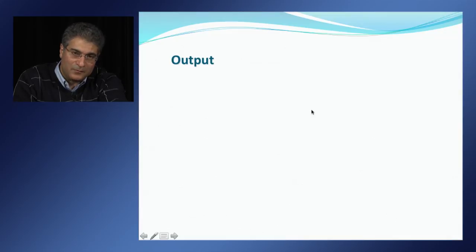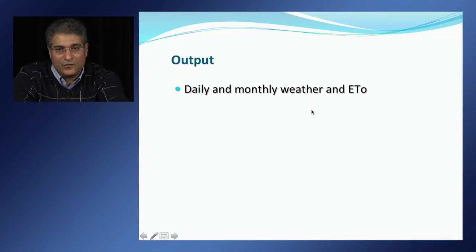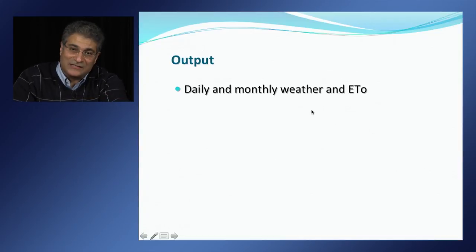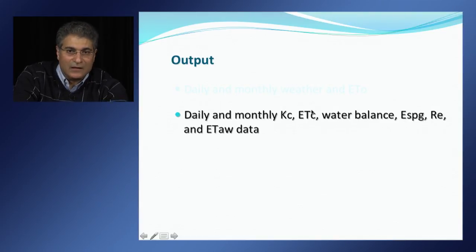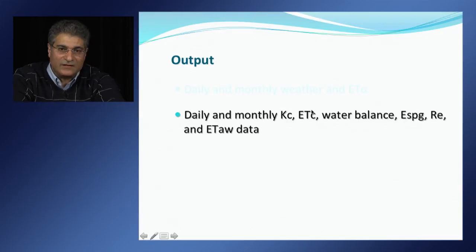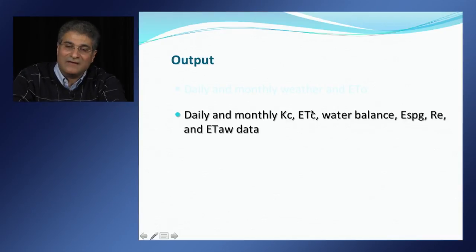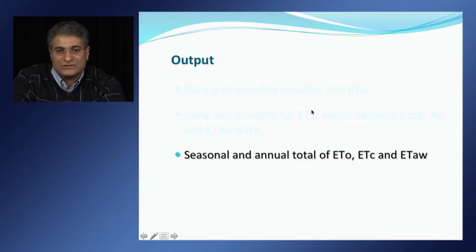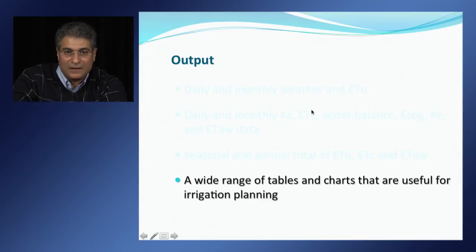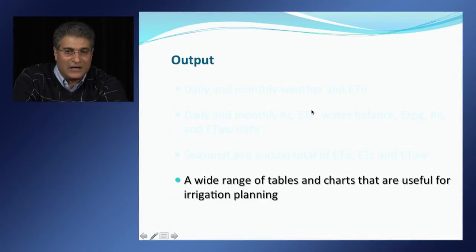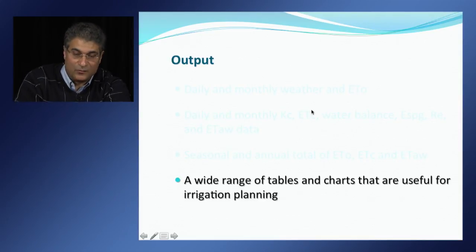Output from COPPLUS consists of daily and monthly weather and calculated reference evapotranspiration, daily and monthly calculated crop coefficient, crop evapotranspiration, soil water balance, effective seepage of groundwater, effective rainfall, and ET of applied water within a study area, as well as seasonal and annual totals of reference evapotranspiration, crop evapotranspiration, and ET of applied water. COPPLUS also has the capability to output a wide range of tables and charts useful for irrigation water planning.